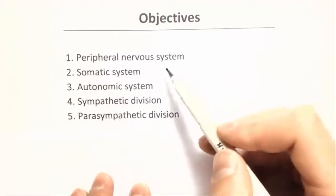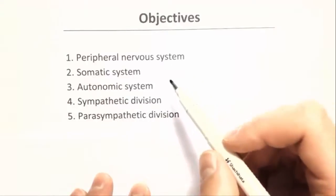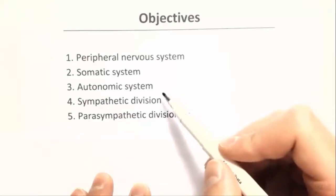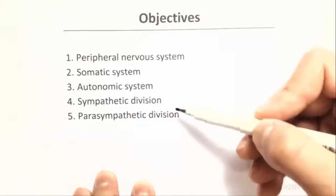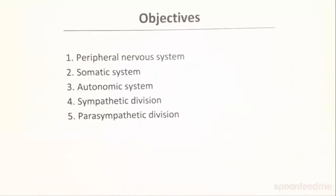Now we're going to look at the peripheral nervous system. It's made up of the somatic system and the autonomic system, and the autonomic system is made up of the sympathetic division and the parasympathetic division, which we'll have a look at now.